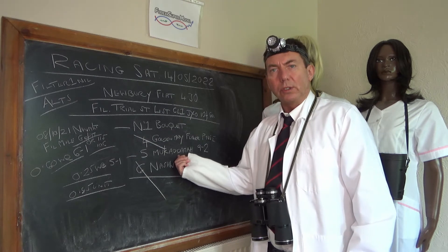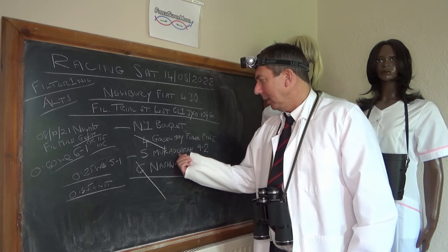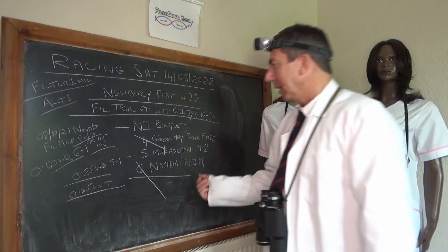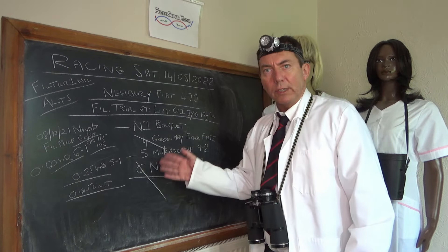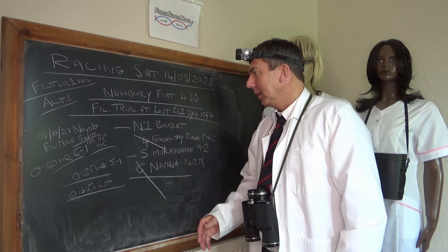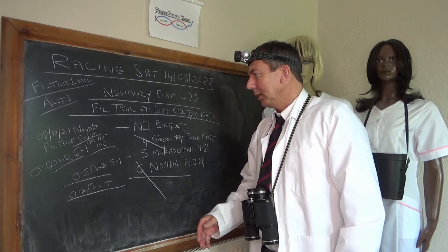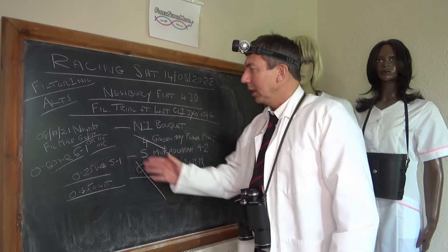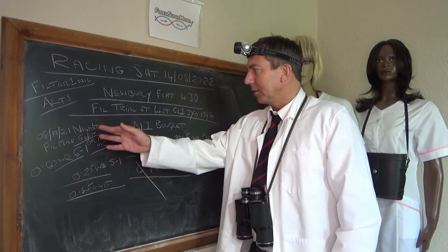But the one we're really interested in is number one Bouquet, ridden by Dettori, and it's likely to shorten off the back of that. What do we like about this horse? Well basically it's got pretty much the strongest route through the pattern as you can imagine.